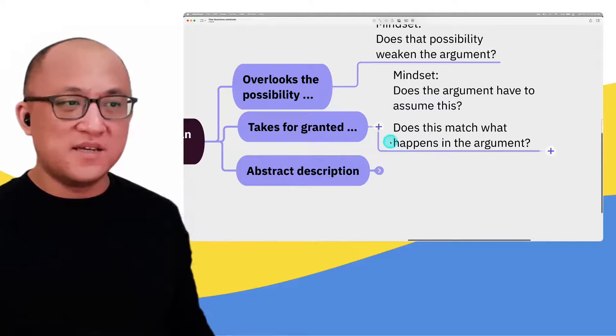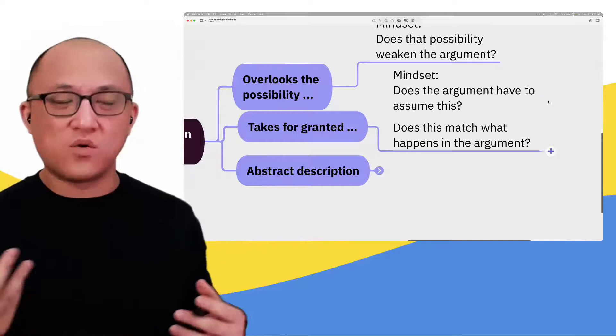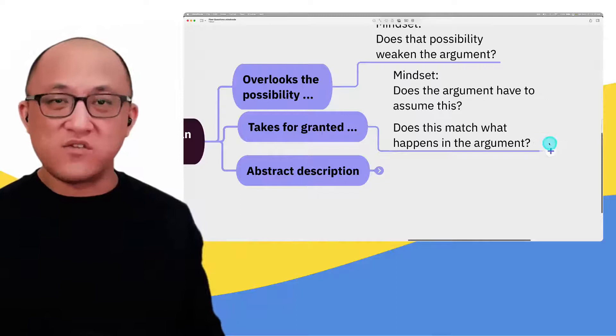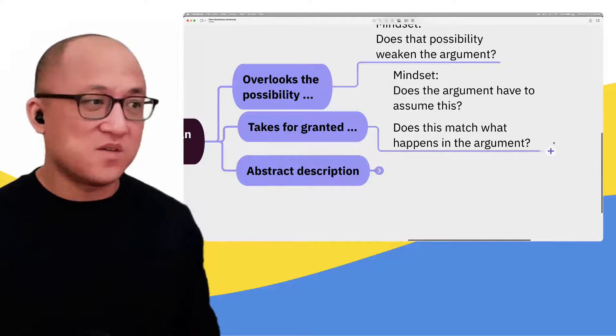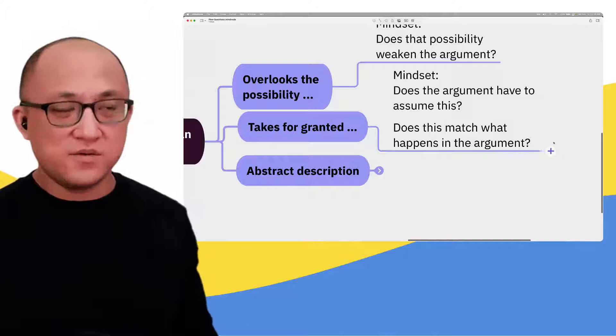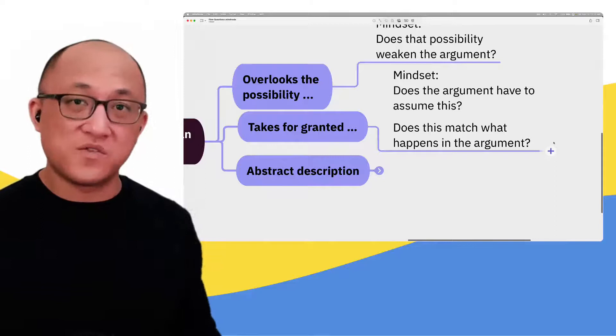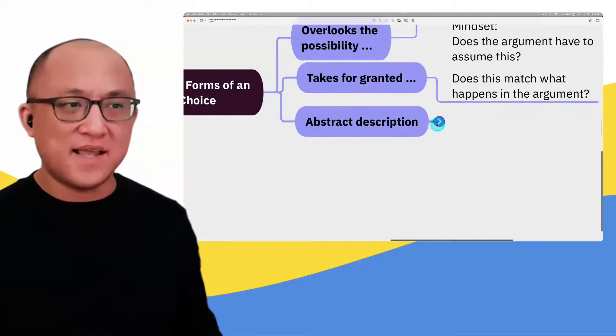A secondary question you might have is: does this alleged assumption match what happens in the argument? Sometimes, rather than approaching it like a necessary assumption or doing some complicated negation, it's easier just to evaluate whether the different parts of this alleged assumption match up to the different parts of the stimulus. If the answer says, for example, 'takes for granted that a necessary condition is a sufficient condition,' you can go to the premise and ask: did they give me a necessary condition here? And then, did they treat that as a sufficient condition? That's a way of analyzing 'takes for granted' answers.